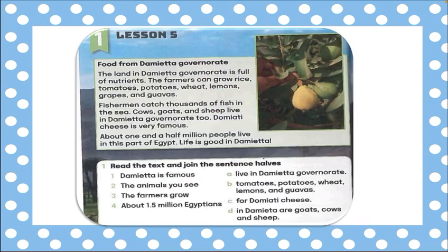Damietta is famous for its cheese, fish, fruits, and vegetables. About one and a half million people live in this part of Egypt. Life is good in Damietta.